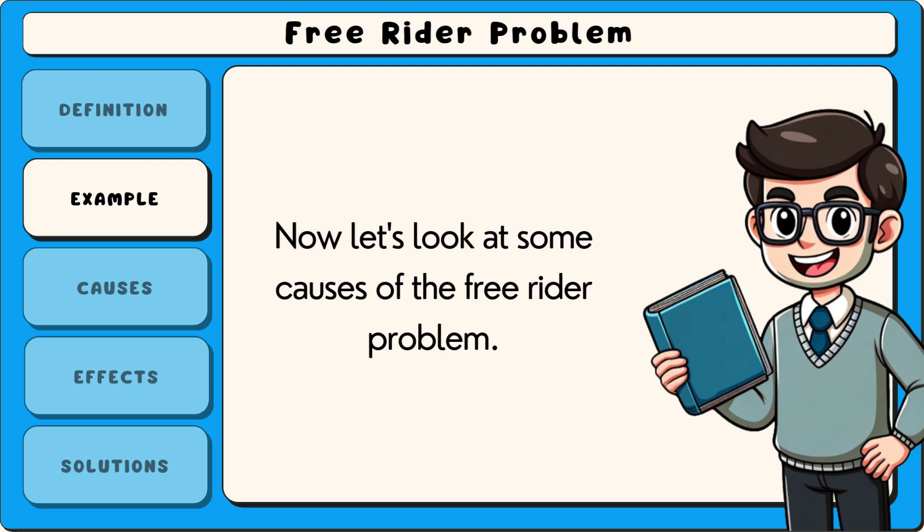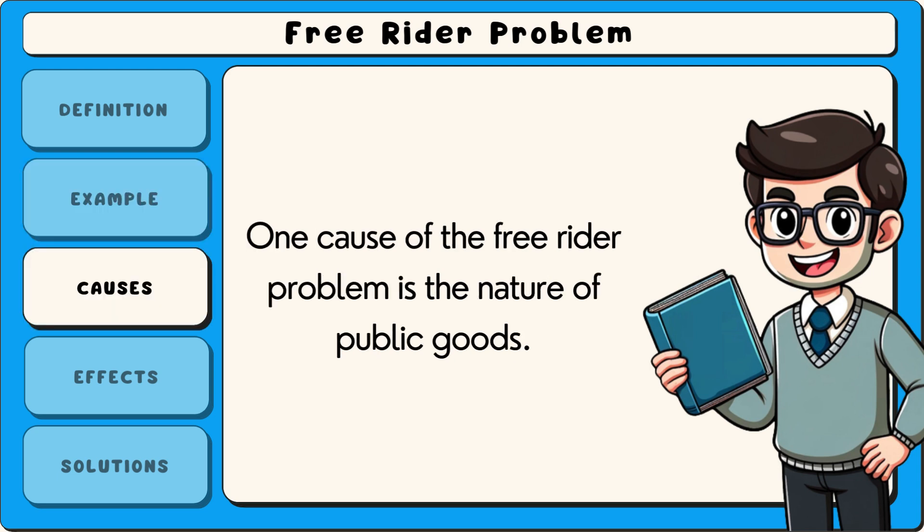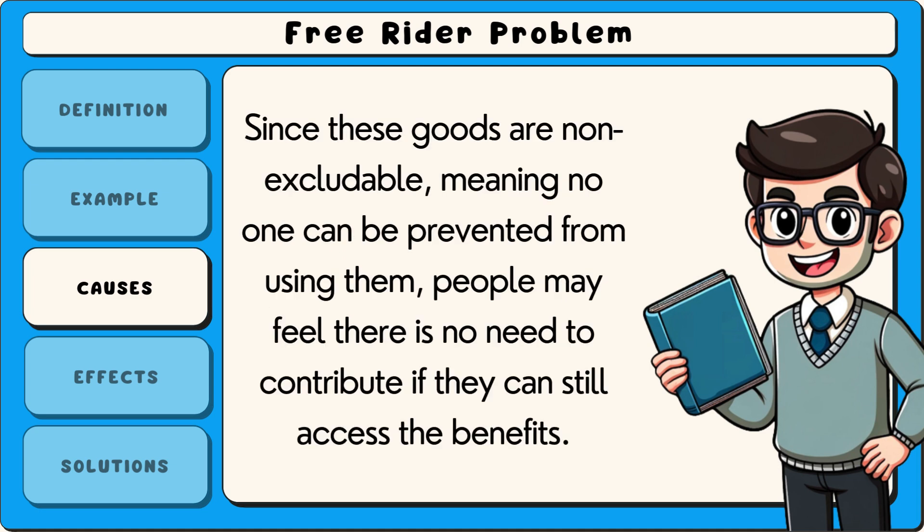Now let's look at some causes of the free rider problem. One cause is the nature of public goods. Since these goods are non-excludable, meaning no one can be prevented from using them, people may feel there is no need to contribute if they can still access the benefits.